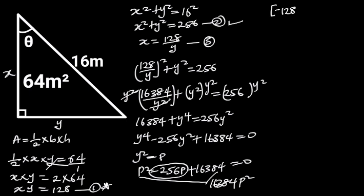Next, we replace minus 256p with minus 128p and minus 128p. Doing so will give us p squared minus 128p minus 128p plus 16384 is equal to 0.